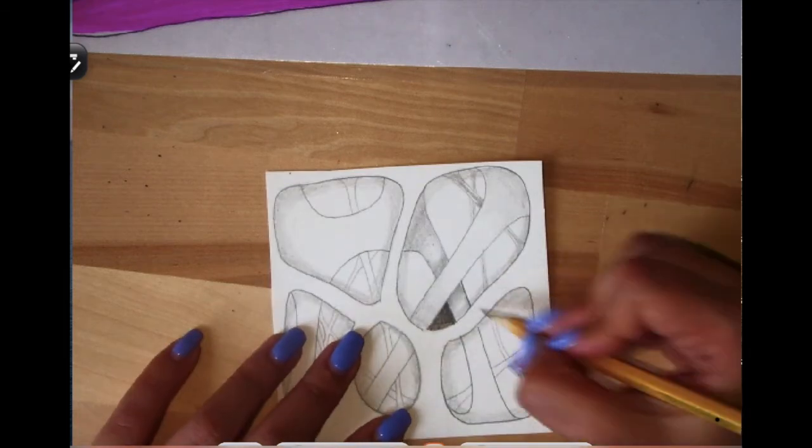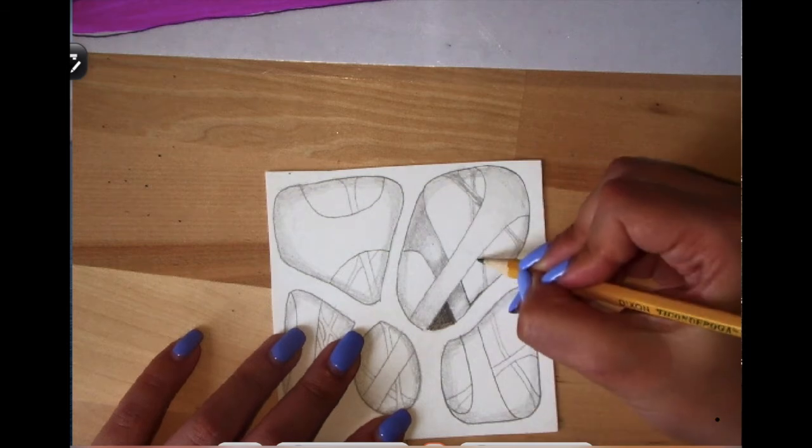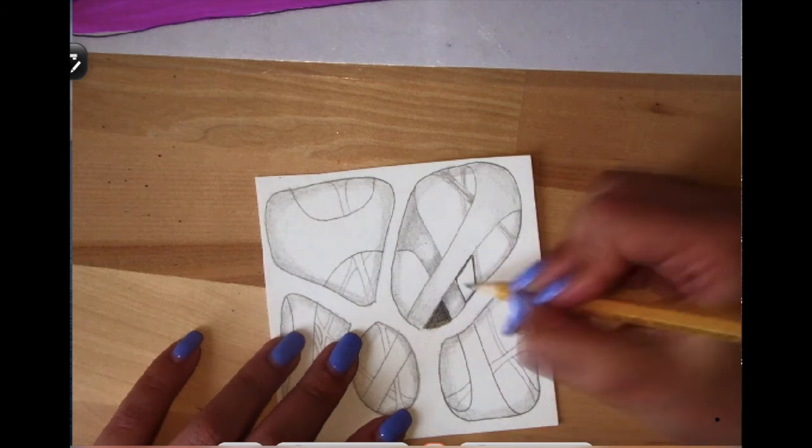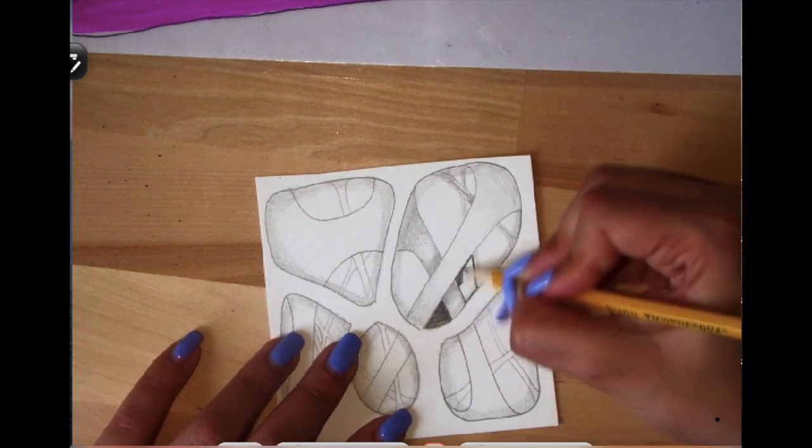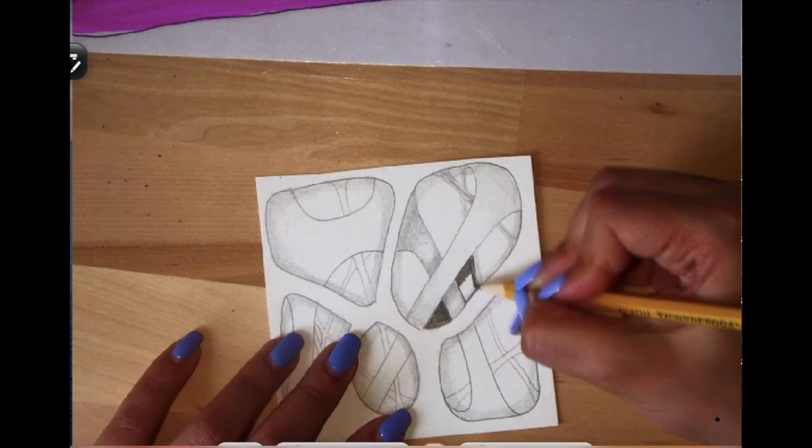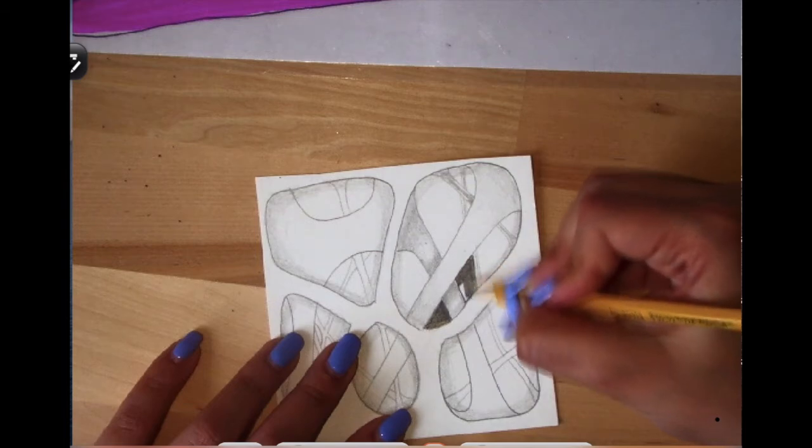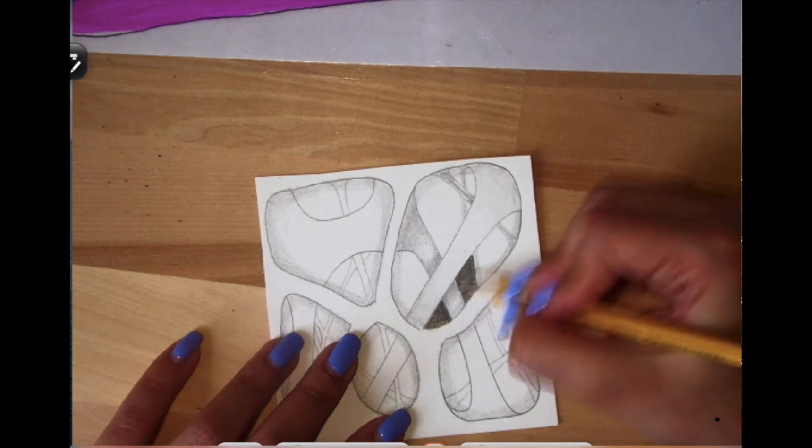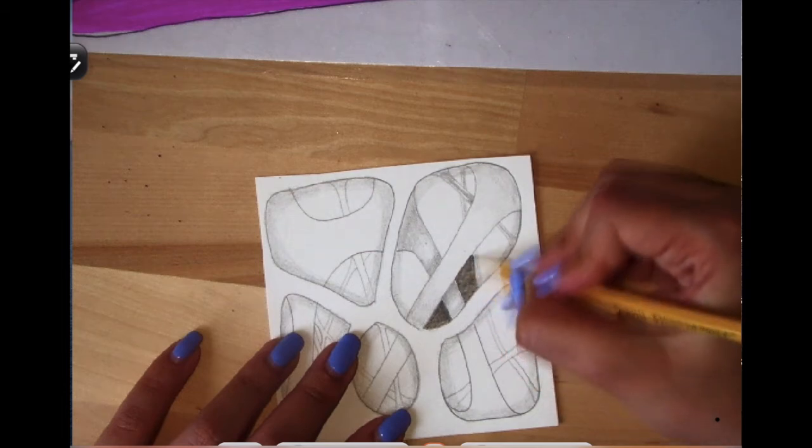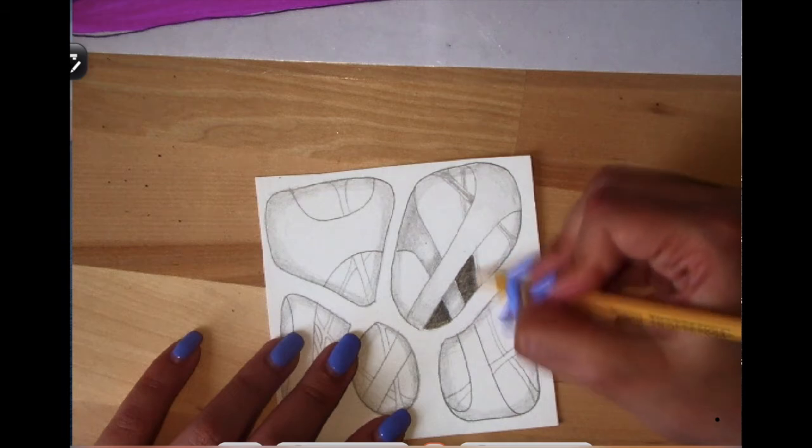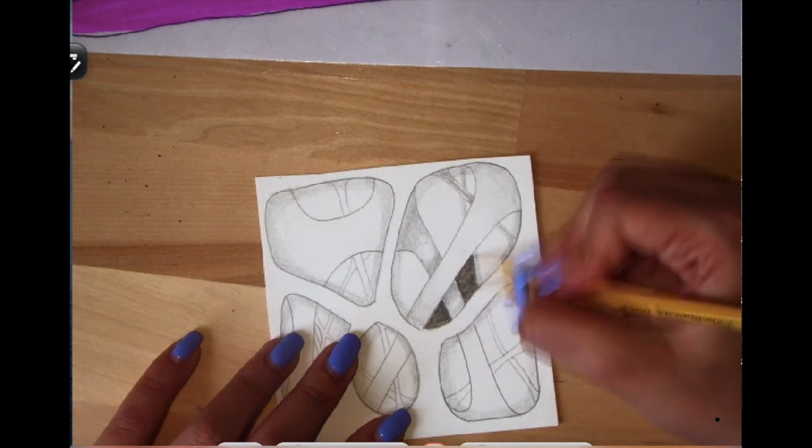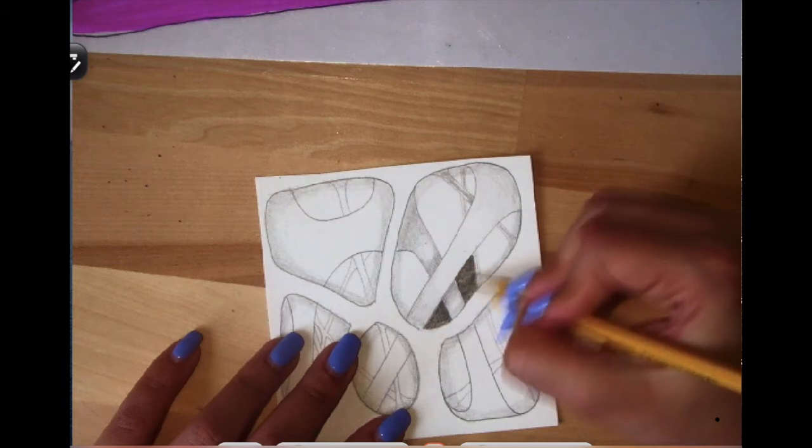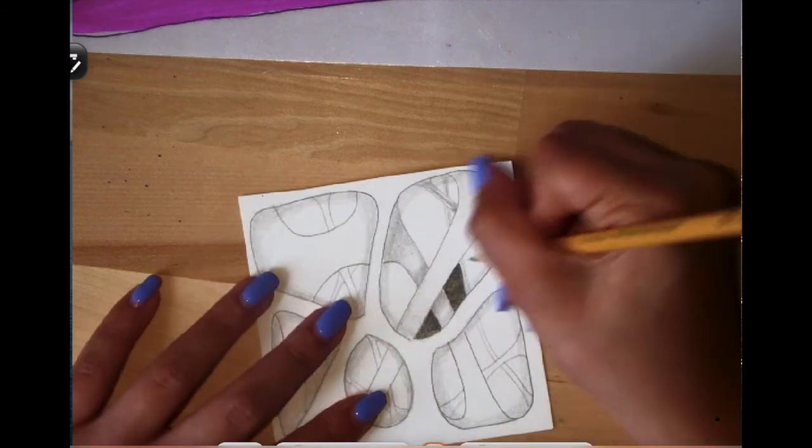And then I would start a new section. Same thing. Outline our piece first. So, when you start to shade really heavily, you're going to notice that you do see a lot of your pencil strokes. So, what I do is I go over it again, going up and down, and then I go side to side to just kind of blur them out. And then I do a new section.